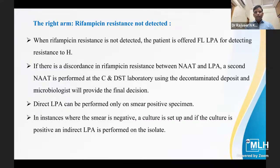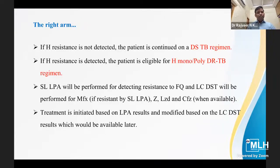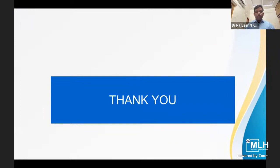The right-sided arm — Rifampicin resistance not detected: the patient is offered first-line LPA for detecting resistance to Isoniazid. If there is discordance in Rifampicin resistance between NAAT and LPA, a second NAAT is performed at the culture and DST laboratory. If Isoniazid resistance is not detected, the patient continues on DSTB regimen. If Isoniazid resistance is detected, the patient is eligible for H-monoresistance DR-TB regimen. This covers the diagnostic approach in DR-TB patients.